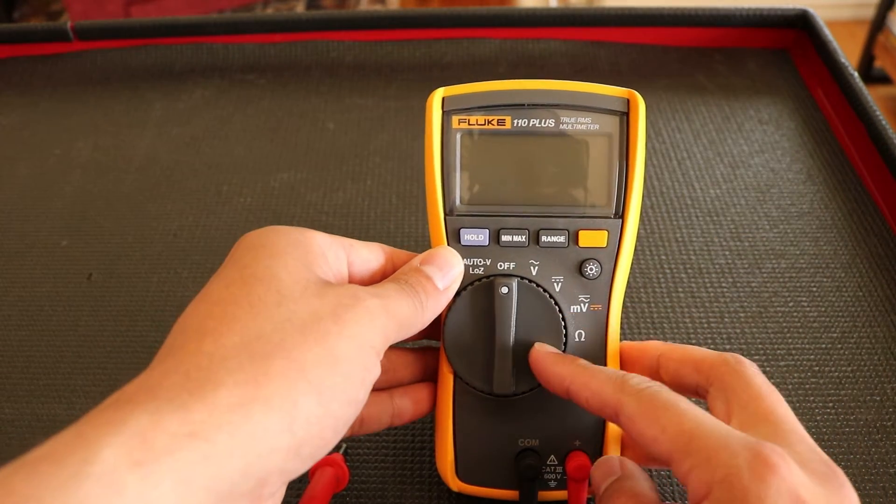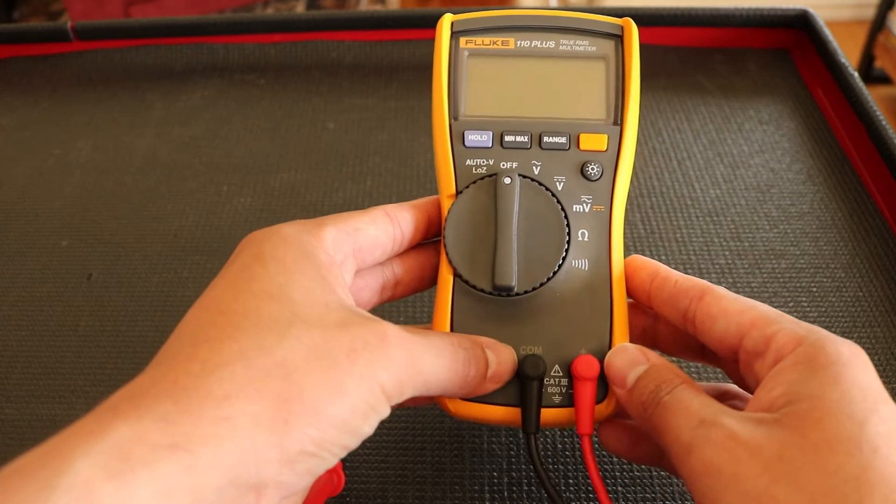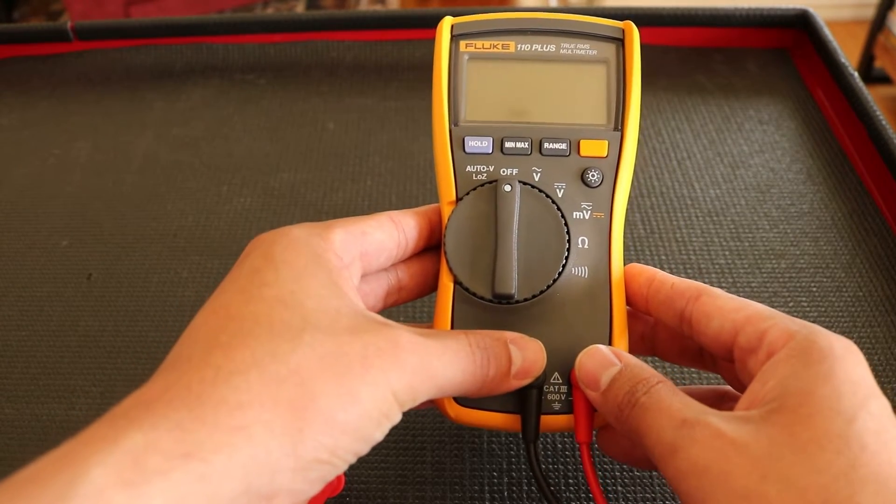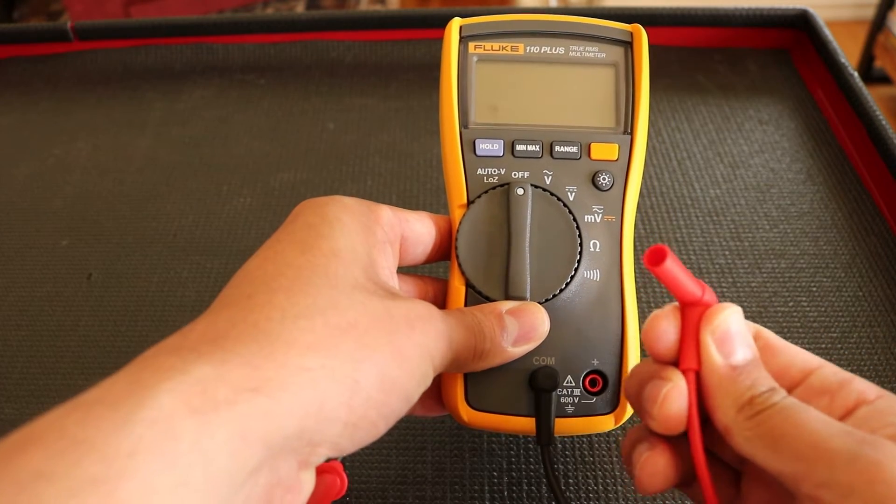As you can tell, the multimeter has a knob and a display in the front, and in the bottom it has the ports where the test leads go. The test leads simply pull out and push in.